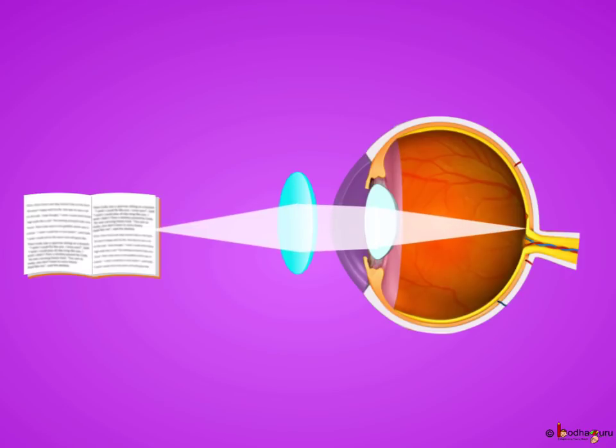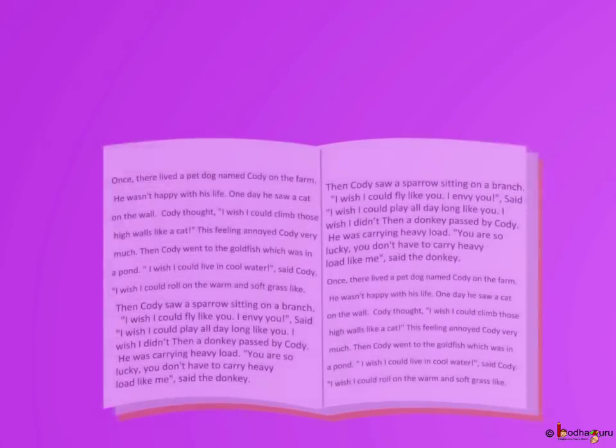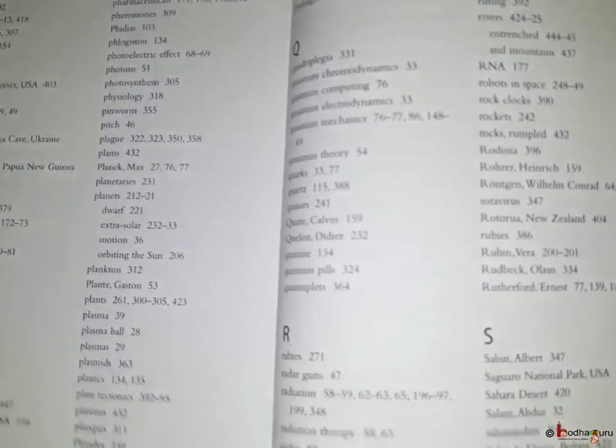Thus, using the corrective lens, the person is able to read the book clearly from a close distance.